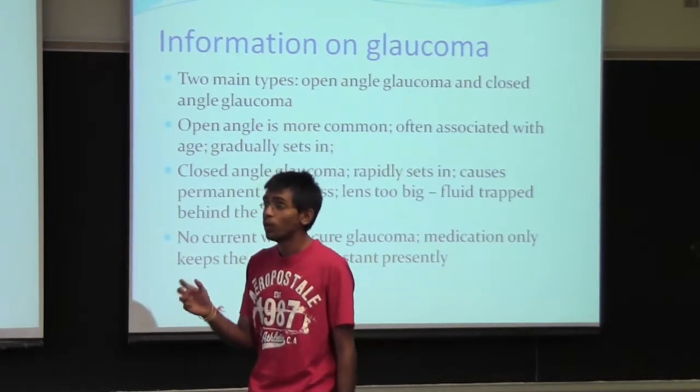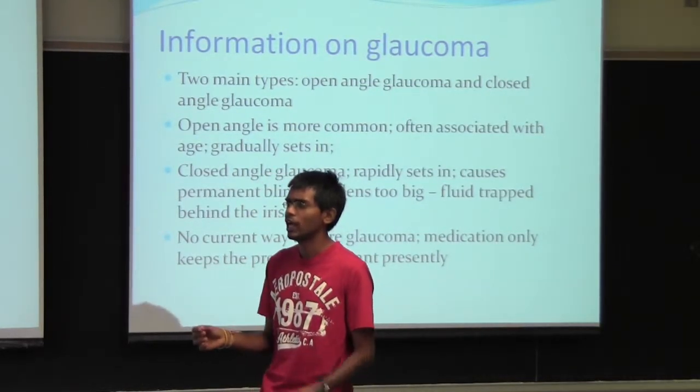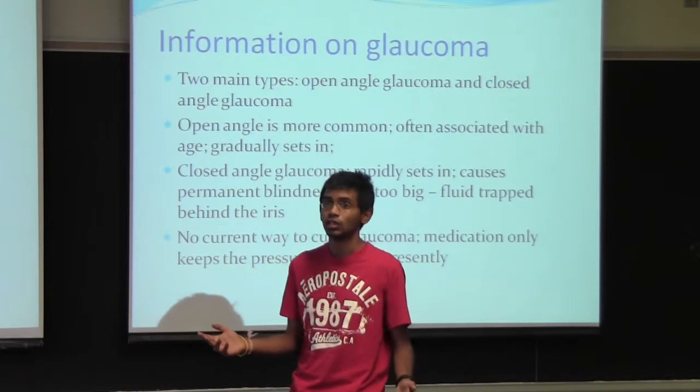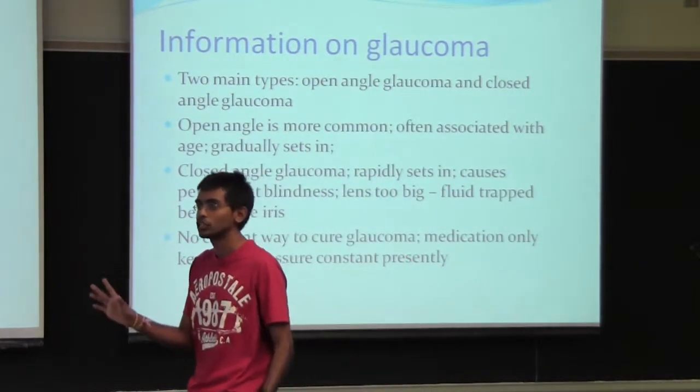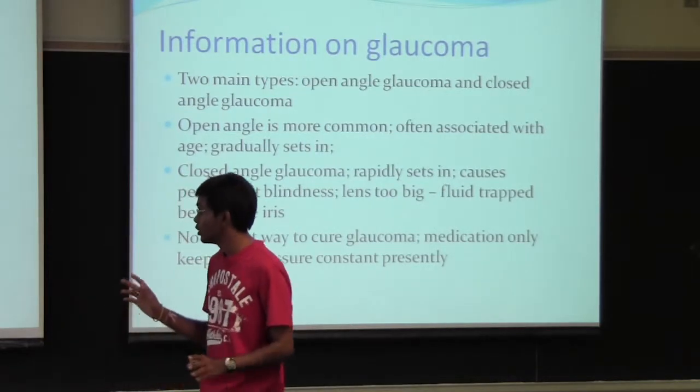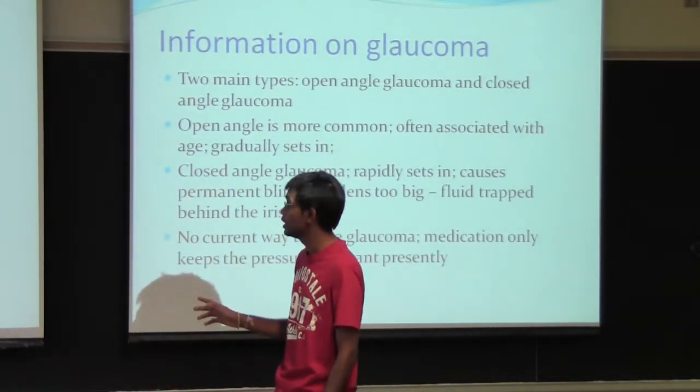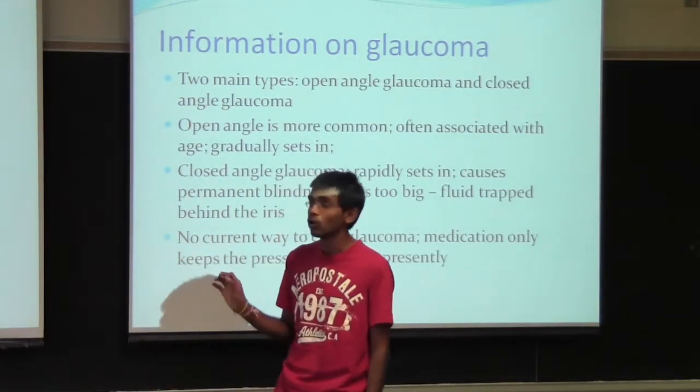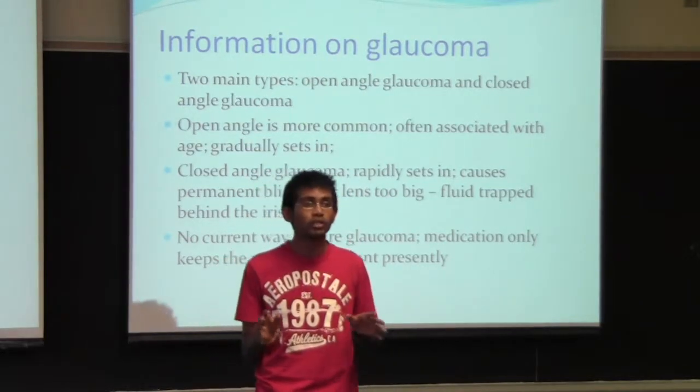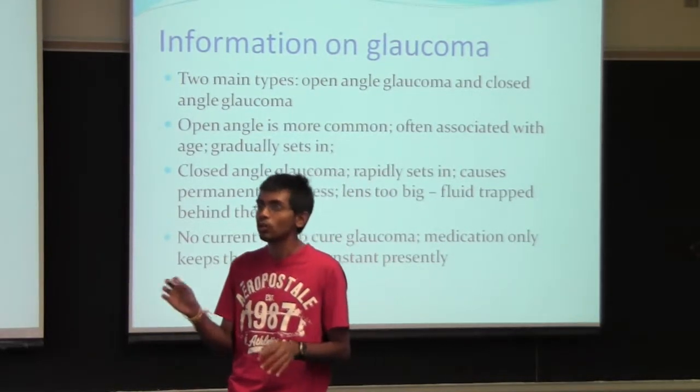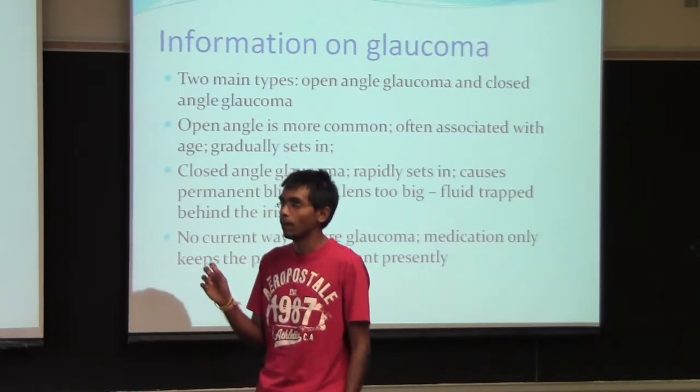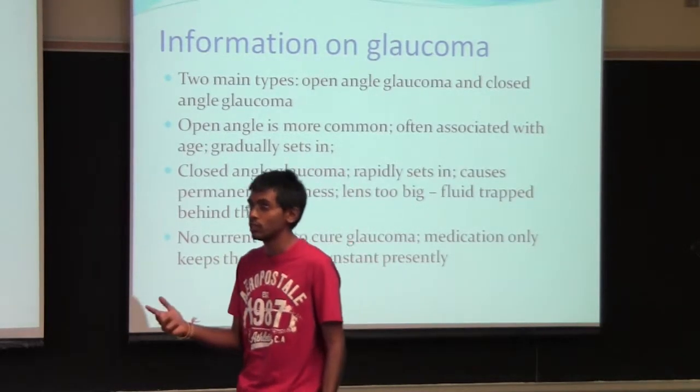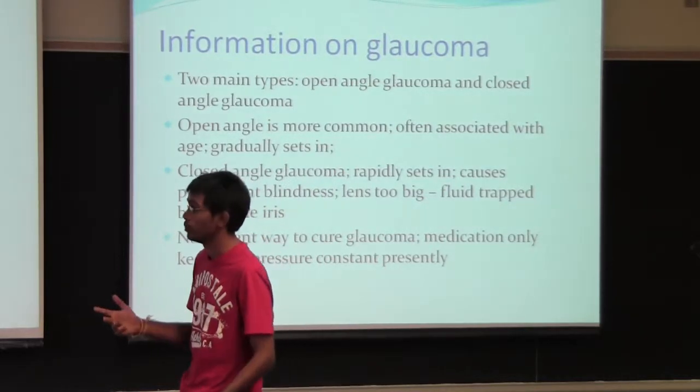The more common one is the open-angle one, and it's usually accompanied with an increase in age. So once you're over 40, you have to go to the doctor once a year just to check the pressure in your eye and make sure you're not having glaucoma. And presently, there's no way to cure glaucoma. The only thing we can do is keep the pressure constant. There's no way we can send the pressure down. And there's no way to detect it early either, aside from measuring the pressure once in a while. So it's a very serious problem.